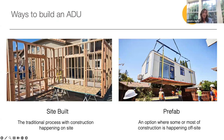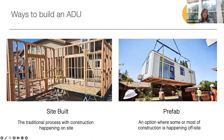So, ways to build an ADU — there are different ways to build them. The traditional process is by hiring an architect to design the plans and then a general contractor to build the new unit on site. There are also a number of companies offering prefabricated or modular units where most of the construction happens offsite in a warehouse and then is delivered and assembled at the home once ready. There are pros and cons to each approach.